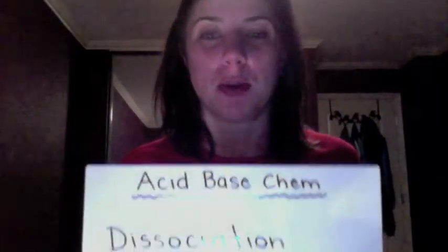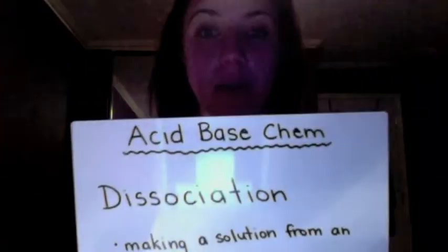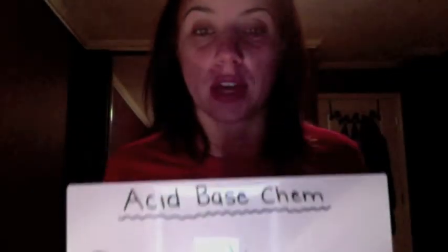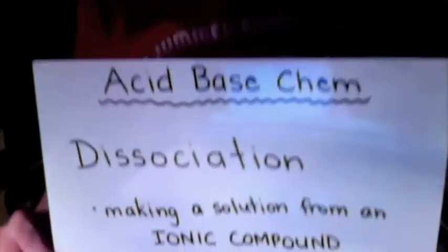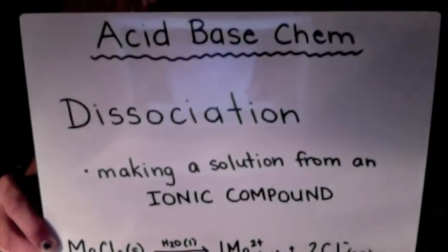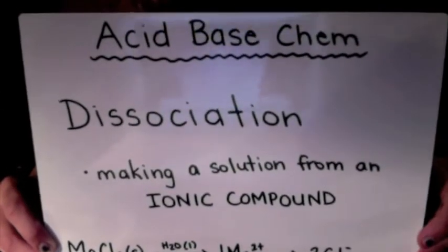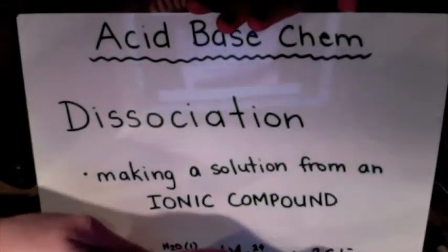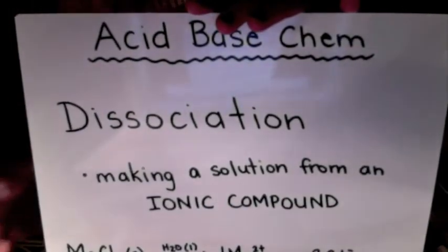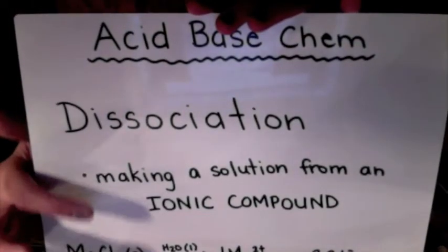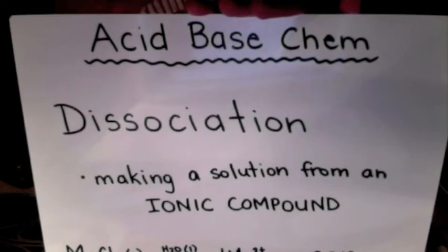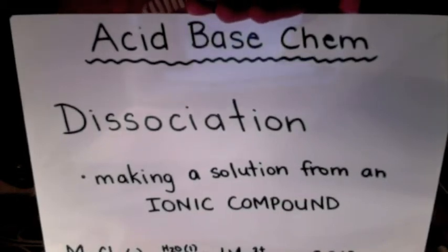I'm going to teach you about acid-base chemistry and clear up a few things for CHEM20. The first thing is dissociation. Dissociation is making a solution from an ionic compound. That's important — it only happens with ionic compounds. So dissociation is only of ionic compounds.